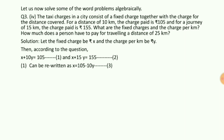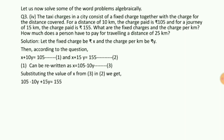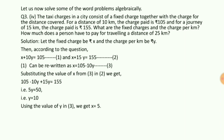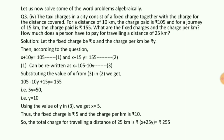Substituting x equal to 105 minus 10y in the second equation: 105 minus 10y plus 15y equal to 155, which gives 105 plus 5y equal to 155, so 5y equal to 50, giving y equal to 10. Substituting y equal to 10 in equation 3 gives x equal to 5. Thus, the fixed charge is rupees 5 and the charge per kilometer is rupees 10. The total charge for traveling 25 kilometers is x plus 25y, that is 5 plus 25 into 10, which equals 255 rupees.